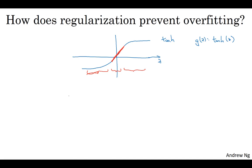So the intuition you might take away from this is that if lambda, the regularization parameters large, then you have that your parameters will be relatively small, because they're penalized to be large in the cost function. And so if the weights W are small, then because z is equal to W—and then technically it's plus B—but if W tends to be very small, then z will also be relatively small.